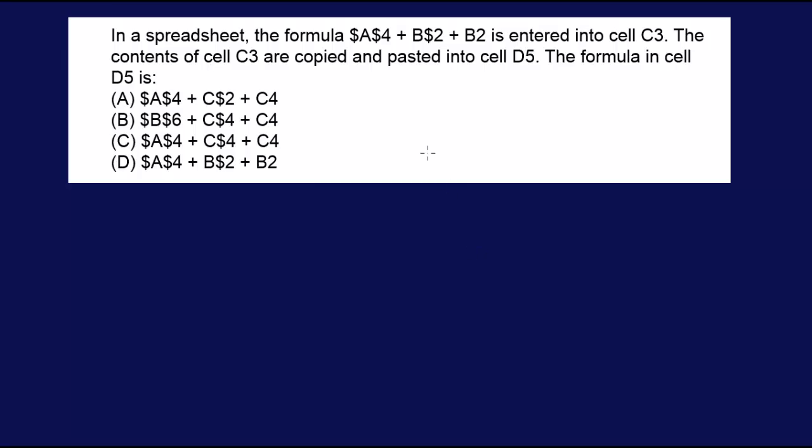So essentially here, when you have the dollar signs here in front of the row, so these are your letters are your columns and then your numbers are your rows. Okay, so if you have dollar signs in front of both, it's called absolute. It doesn't change. You remain unchanged.